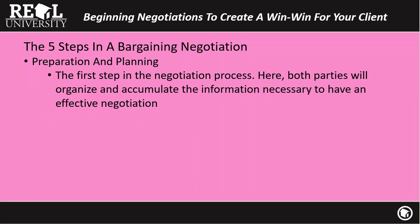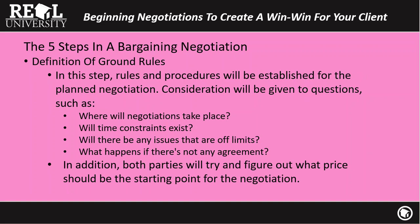The first step is where both parties organize and accumulate the information to have an effective negotiation. This step is typically done prior to them meeting each other. The seller has already done his preparation when he put the house on the market, and the buyer has already determined his goals — like wanting to live in a certain area or wanting a certain size of house. Same thing with the ground rules — we don't have to define where negotiations will take place, time constraints, or things we won't discuss, because real estate already has a set of boundaries for us.